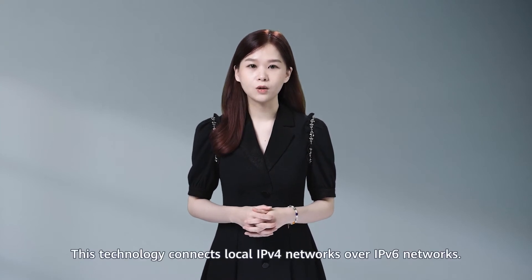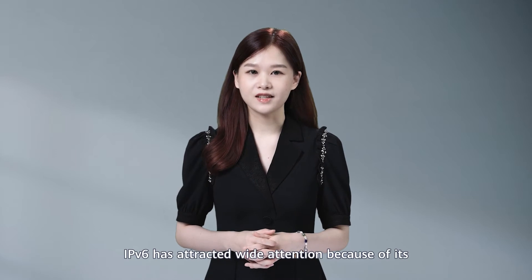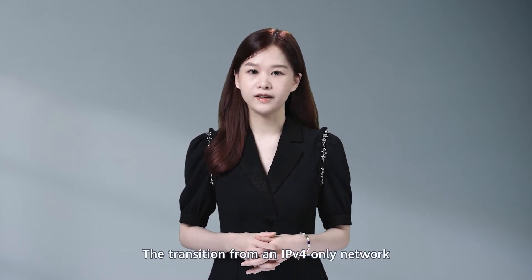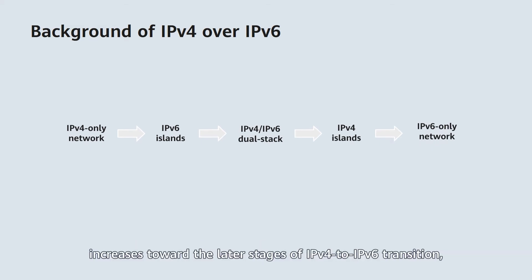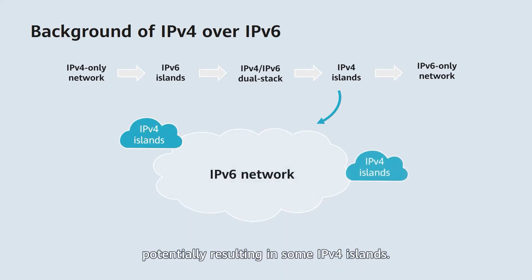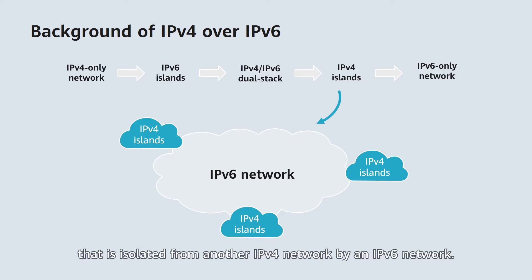This technology connects local IPv4 networks over IPv6 networks. Why do we need IPv4 over IPv6? IPv6 has attracted wide attention because of its huge network address base, simplicity, and security. The transition from an IPv4-only network to an IPv6-only network takes a long time. The scale of IPv6-only network deployments increases toward the later stages of IPv4 to IPv6 transition, potentially resulting in some IPv4 islands. An IPv4 island is a network that is isolated from another IPv4 network by an IPv6 network.